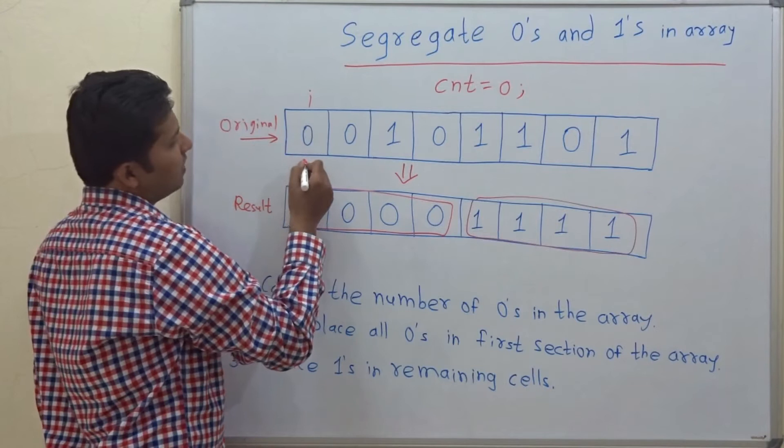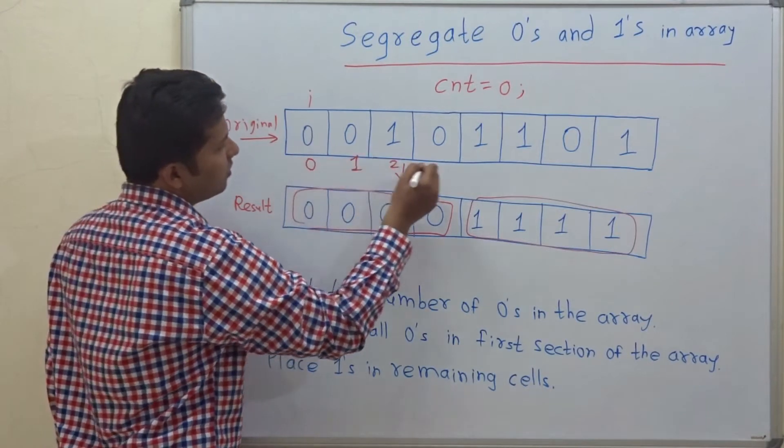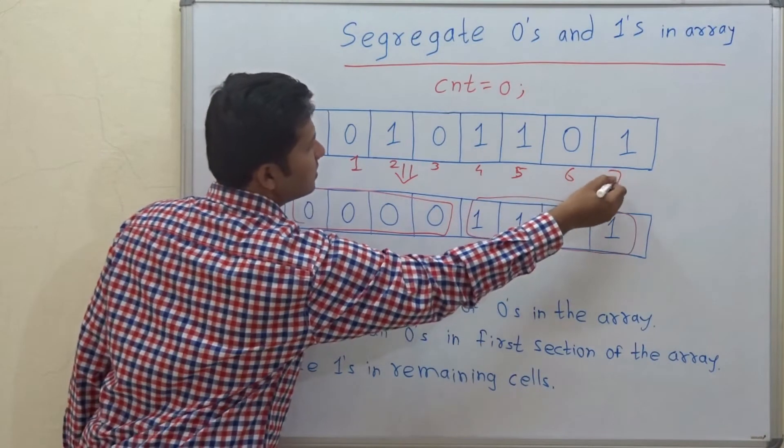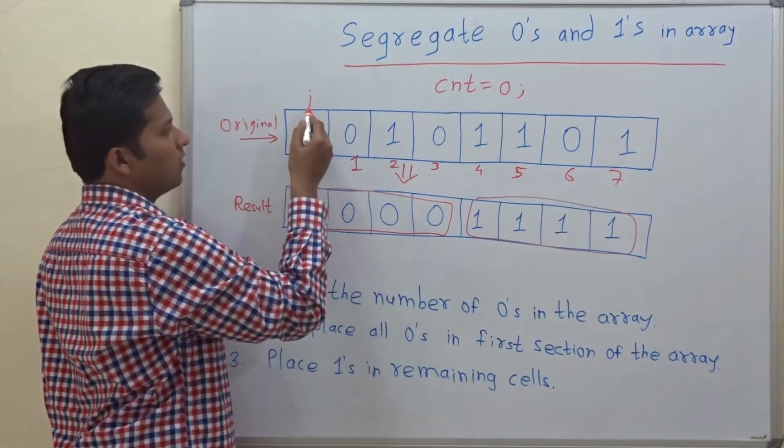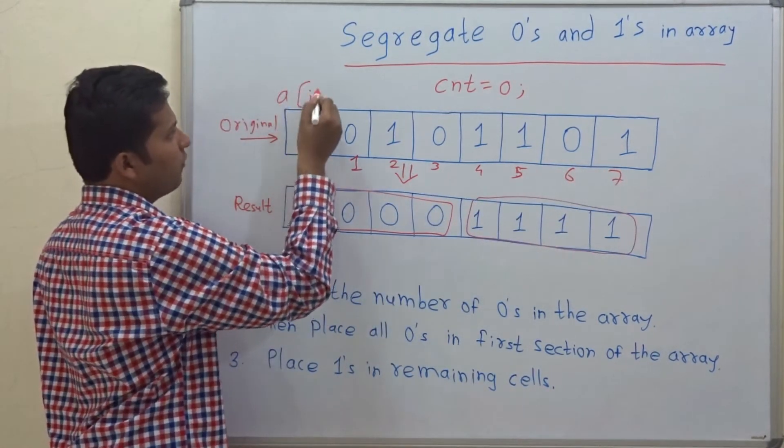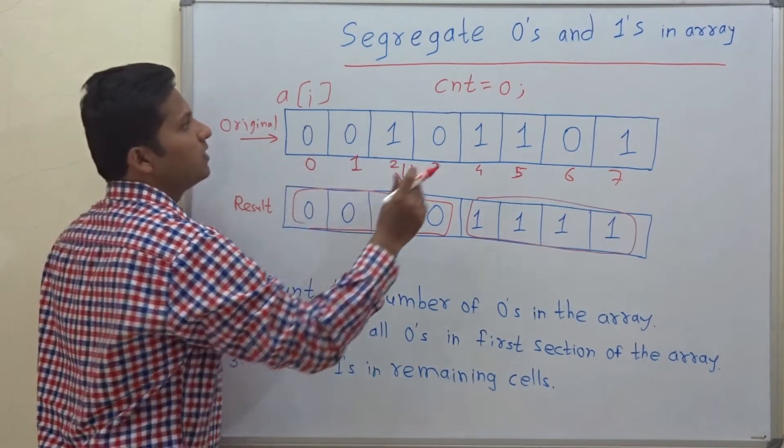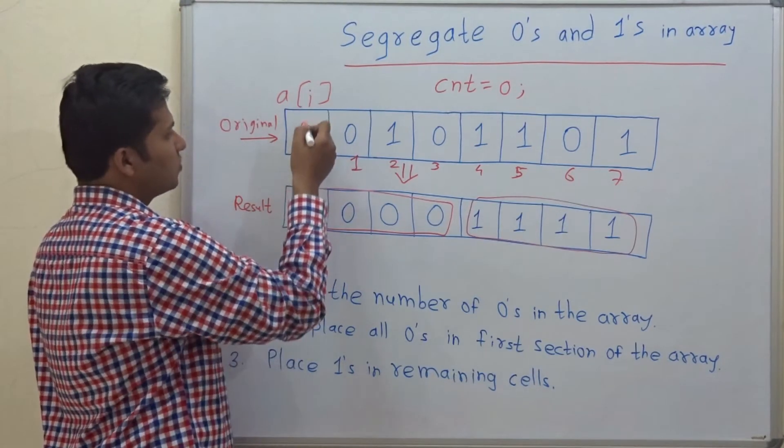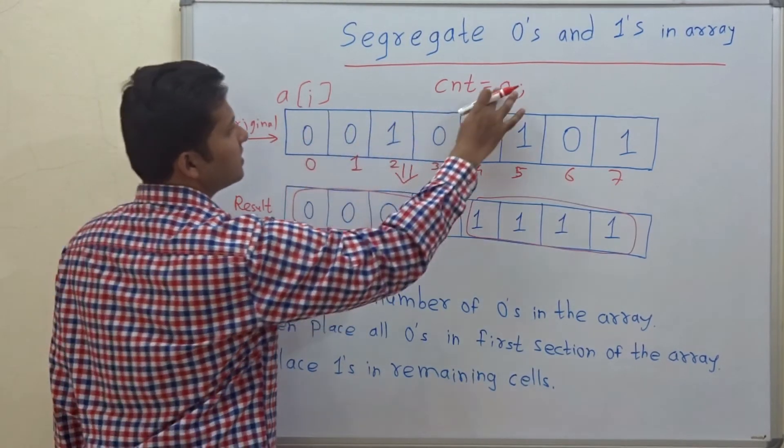So I will give indexes here: 0, 1, 2, 3, 4, 5, 6, 7. So if a[i] is equal to 0 then you have to increment this counter. So let's see. So a[i] is equal to 0. Yes.